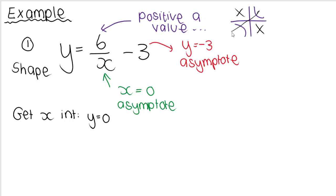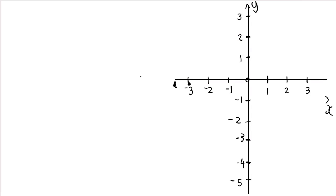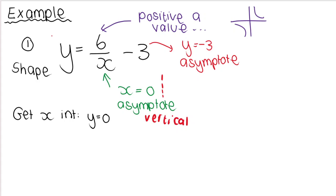Now we plot the asymptotes. x cannot be zero because six divided by zero is undefined, so x equals zero is my vertical asymptote. On the Cartesian plane, I draw a dotted line at x equals zero for the vertical asymptote. Then for the horizontal asymptote, the q value is negative three, so at y equals negative three is my horizontal asymptote, drawn as another dotted line.